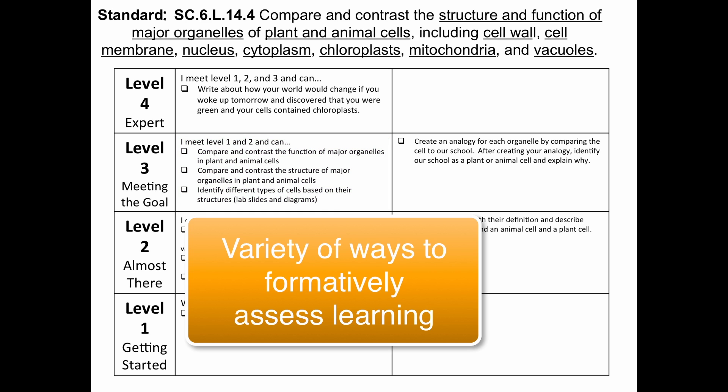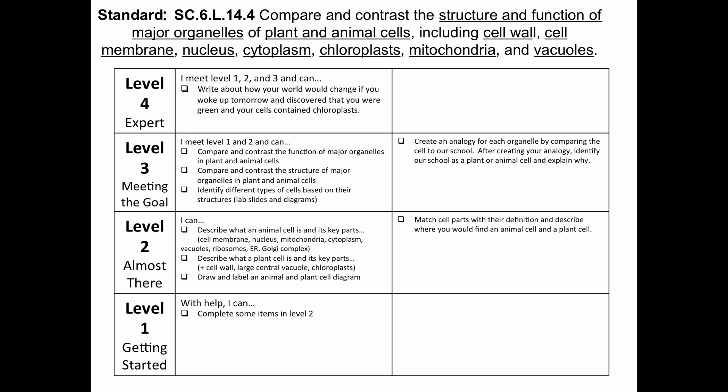There are many strategies that can be used to formatively assess students, such as matching, multiple choice, graphic organizers, exit tickets, or summaries. For this level, I chose an assessment that will require students to create an analogy for each organelle by comparing the cell to our school. After creating an analogy, students will then identify our school as either a plant or animal cell and explain why.